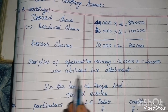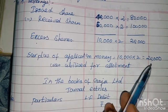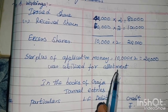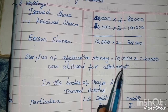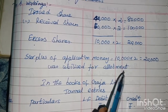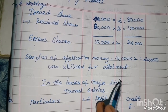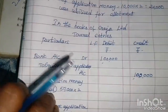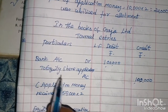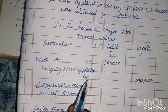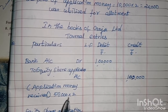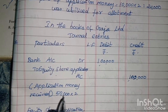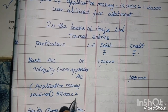The Rs.20,000 surplus was utilized for the allotment. First journal entry: Bank account debit to equity share application account. Application money received is 50,000 shares into Rs.2 equals Rs.1,00,000. Application money is Rs.2 per share.